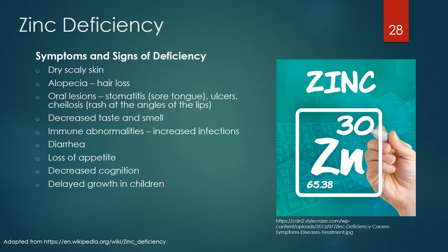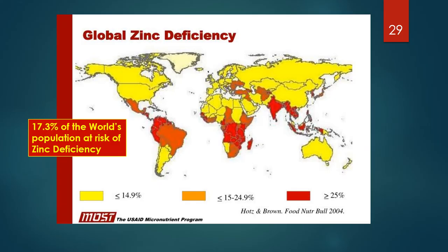Symptoms and signs of zinc deficiency include dry scaly skin, alopecia or hair loss, oral lesions including stomatitis and oral ulcers, decreased taste and smell, immune abnormalities that lead to increased infections, diarrhea which can be severe, loss of appetite, decreased cognition, and delayed growth in children. Zinc promotes immune functions and helps people resist infectious diseases including diarrhea, pneumonia, and malaria. Zinc is also needed for healthy pregnancies. Globally, 17.3% of the population is at risk for zinc deficiency due to dietary inadequacy, and up to 30% in some regions.